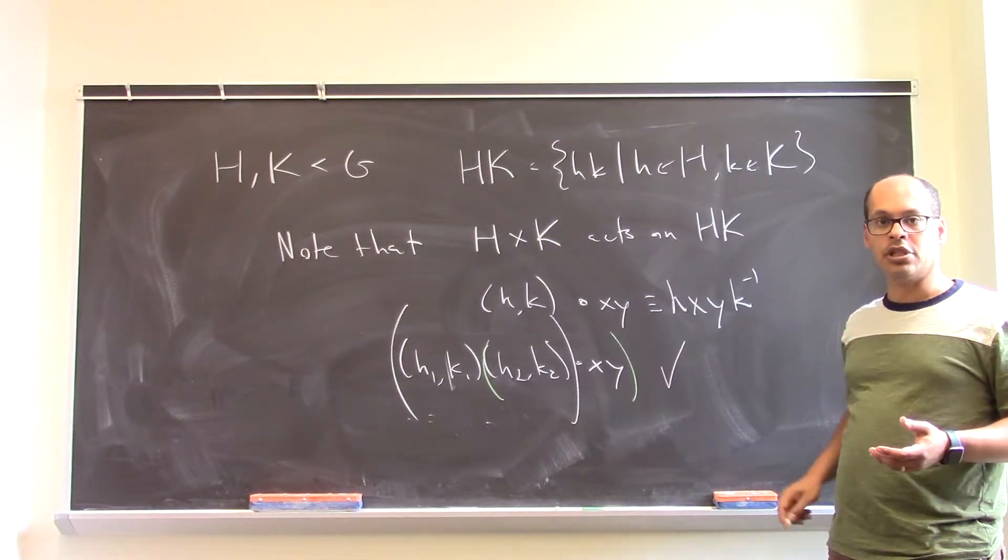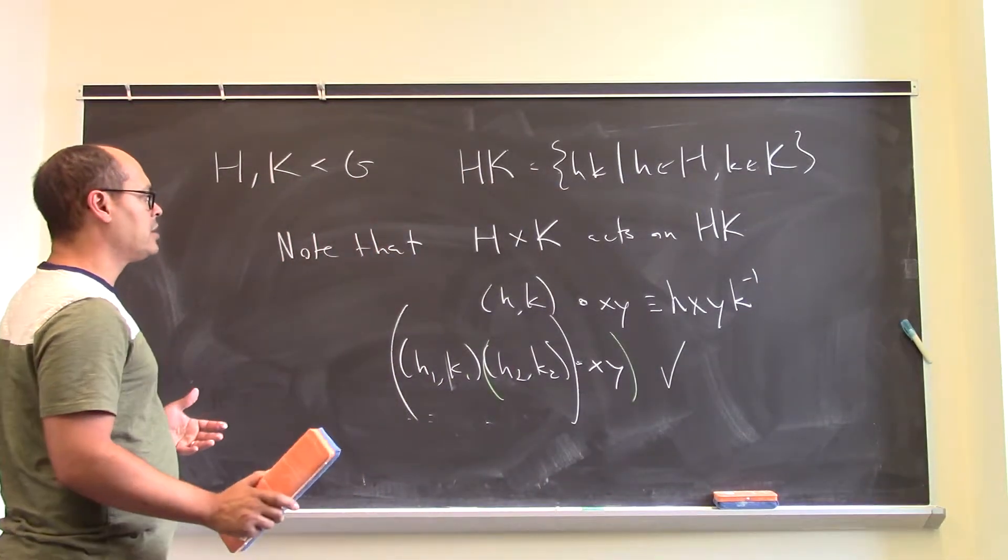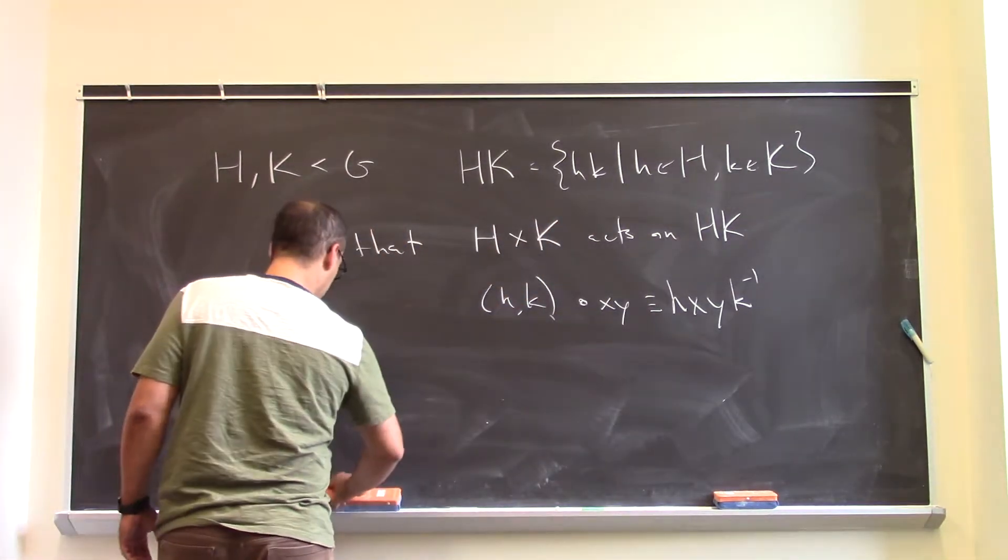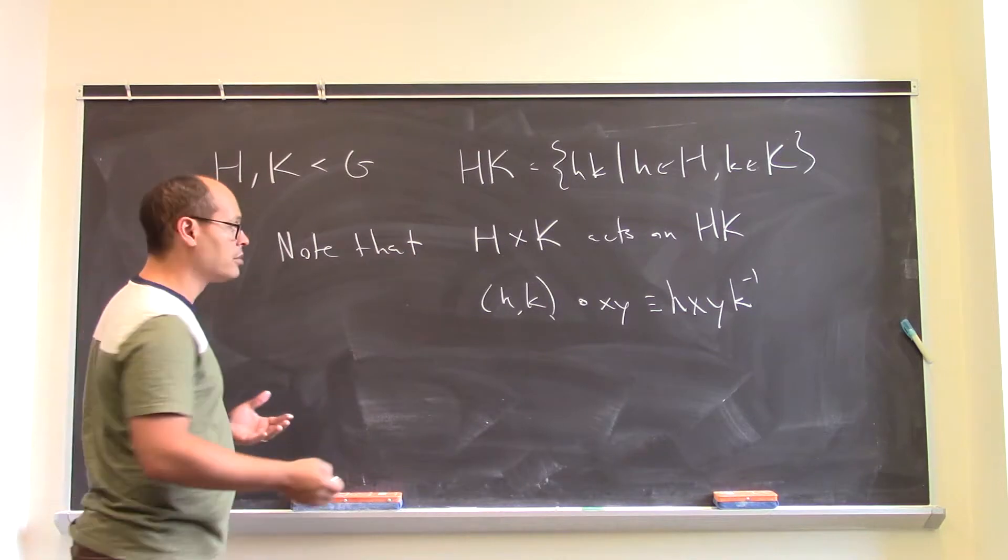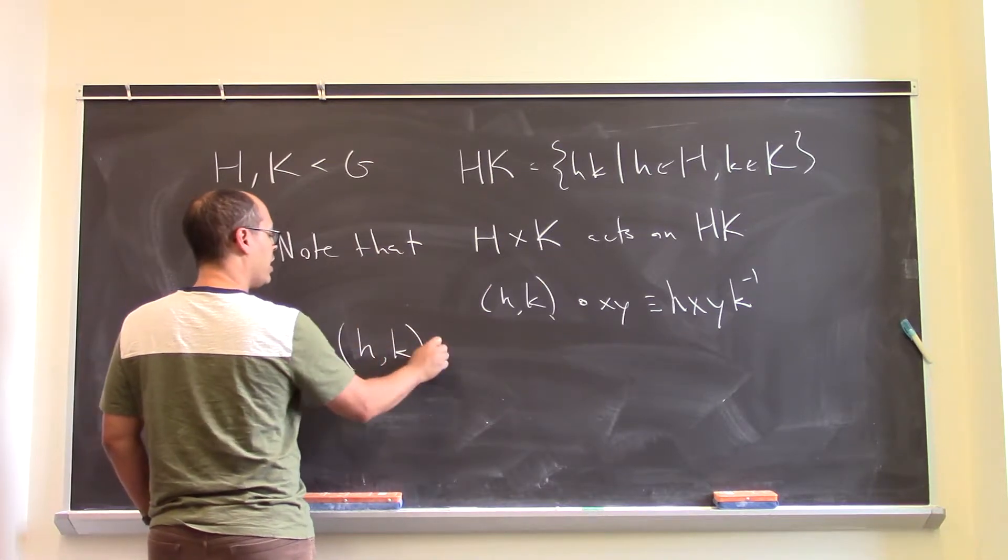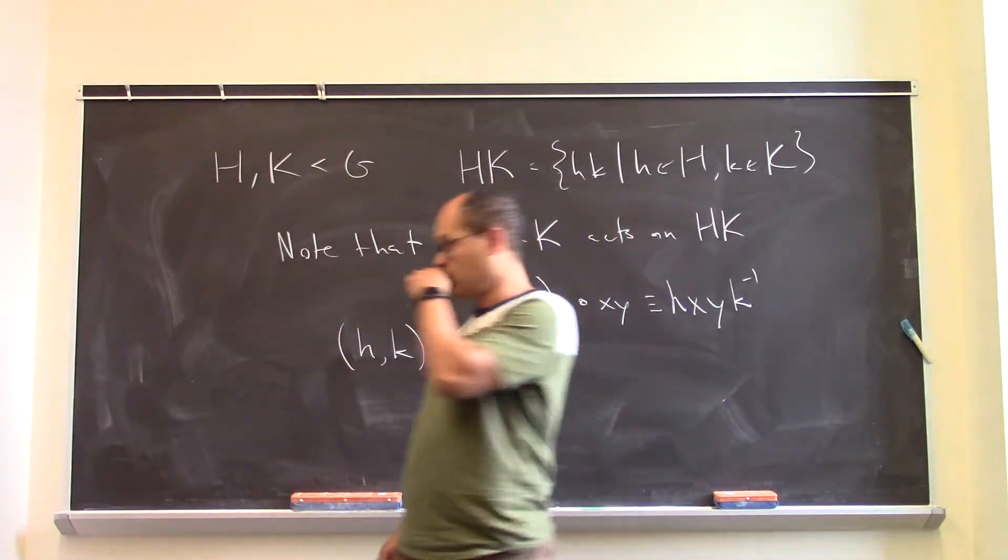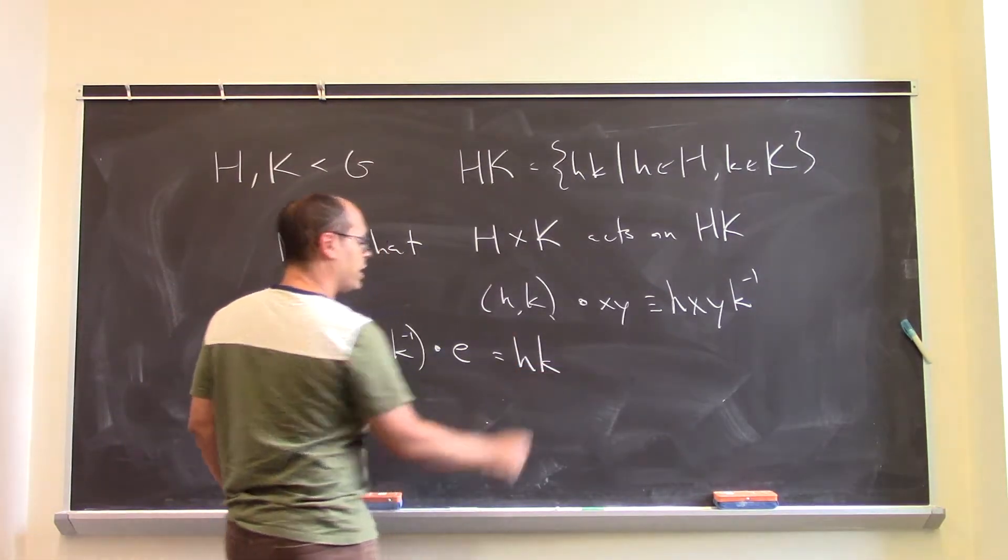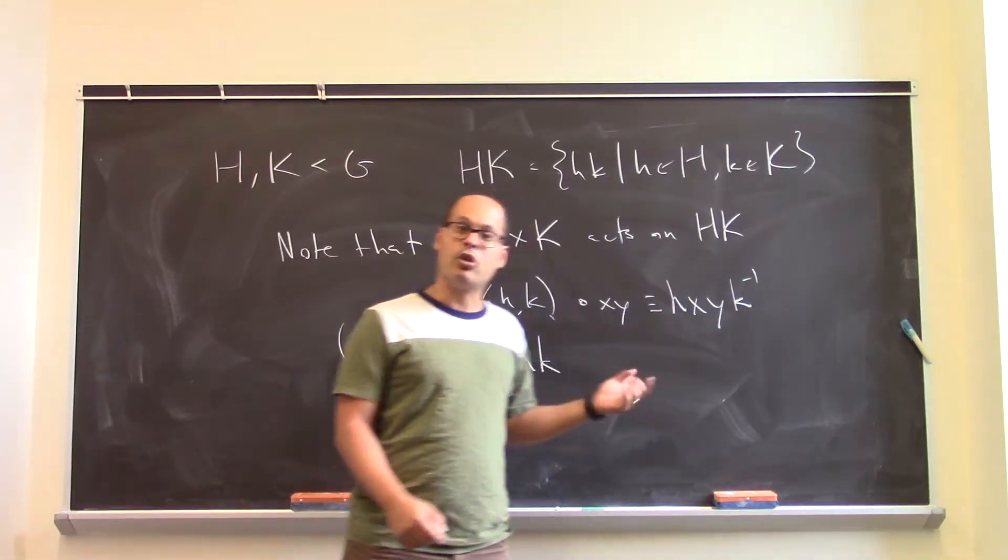So you can just check that this is an action. Let's just say check, but actually check. And so, because of that, you can apply the Orbit Stabilizer Theorem. And let's also note, actually, that HK consists of a single orbit, right? Because if I look at how HK acts on the identity element, which is some particular thing in HK, it's identity times identity, then this is equal to, well, how about HK inverse acting on E? It looks like HK. And so, in particular, everything inside of here is in the orbit of the identity.